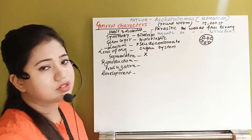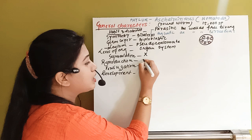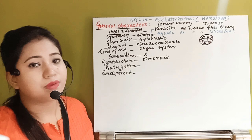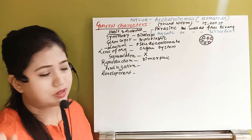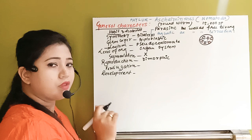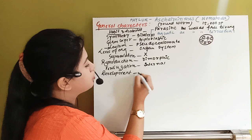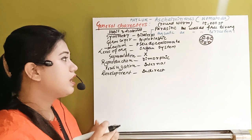For the first time in this phylum, the organism is dimorphic — meaning completely separate male and female organisms are present. Hermaphrodites are not present. Fertilization is internal, and development is indirect with larval stages present.